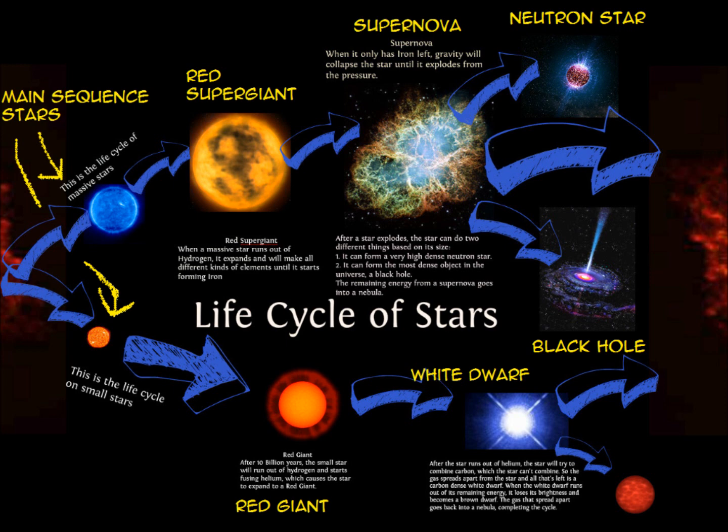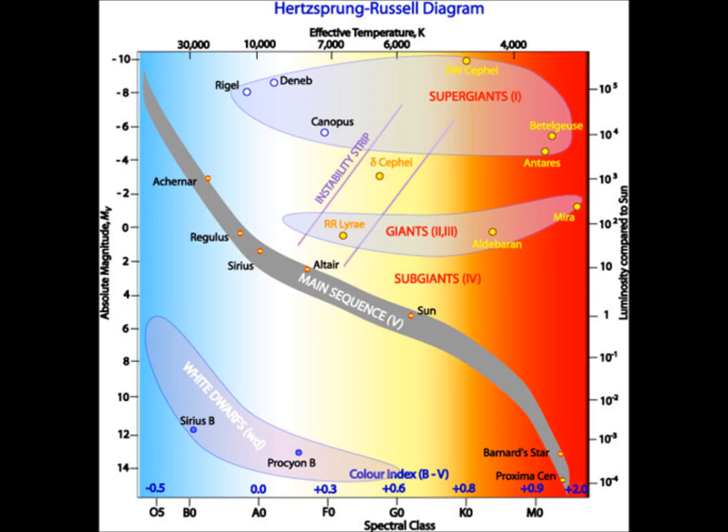Red super giants can't fuse iron, so the core collapses and the star explodes as a supernova. The core collapses to form a neutron star, or if there is enough matter, a black hole. The Hertzsprung-Russell diagram shows different areas indicating where a star is on its life cycle. The top left to bottom right is main sequence stars, the top right is red giants and red super giants, and the bottom left is white dwarves.